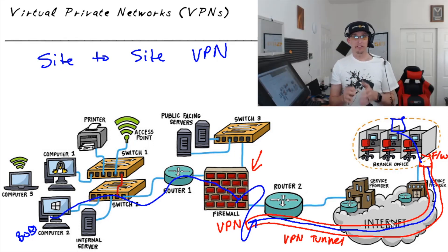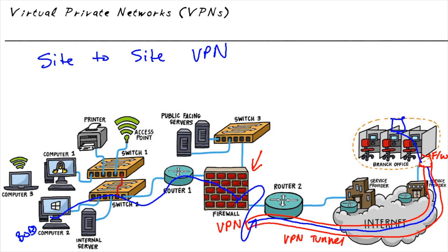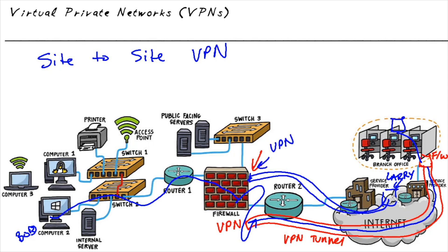Another type of VPN is referred to as a remote access VPN. For example, a user named Larry is on the internet — maybe at his home or a hotel — and would like to access a server or resources at the headquarter site. Rather than communicate unprotected over the internet, Larry can build a VPN tunnel from his computer all the way to the edge of the network, with the firewall acting as the head-end device. Everything between Larry and the headquarter site is then encrypted and protected from eavesdropping.